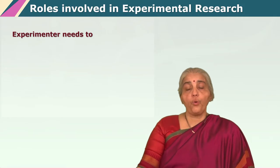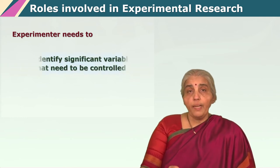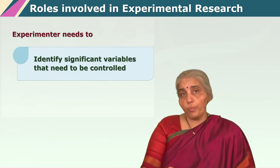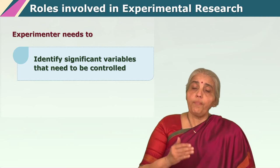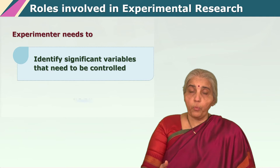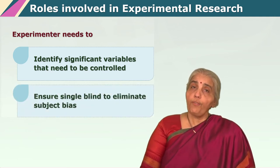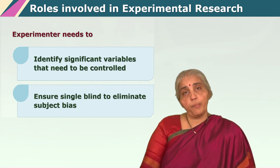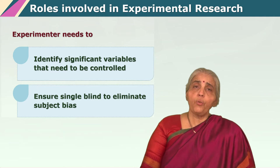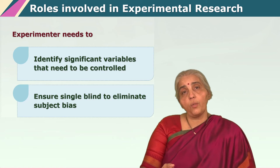I am now going to talk about some of the very important roles, very important jobs that an experimenter must carry out if the experiment has to be successful. The experimenter has to be very particular about all these procedures I have just talked about — when it comes to sampling, when it comes to ruling out bias of any sort from the various groups that come into the experimental and the control group.